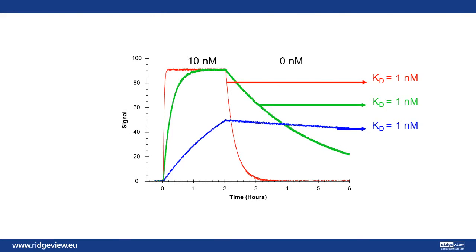An interesting aspect of these curves is that they all have the same affinities, even though their behavior over time varies greatly. In other words, the affinity value alone doesn't tell us anything about the kinetics of an interaction.